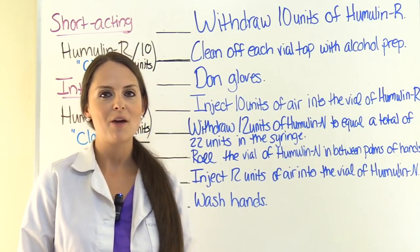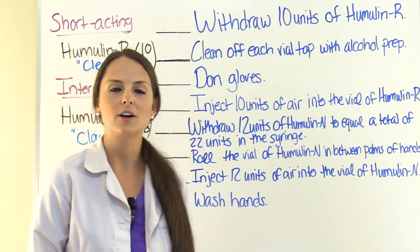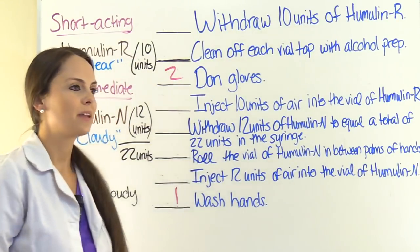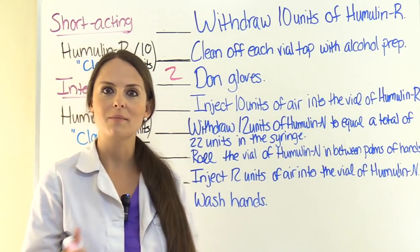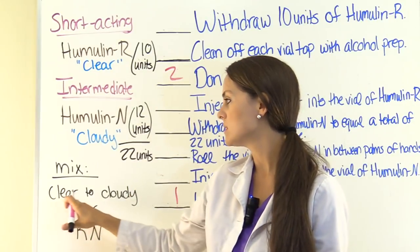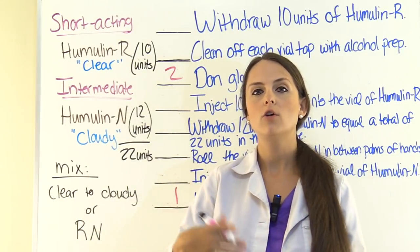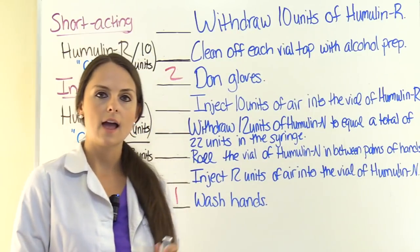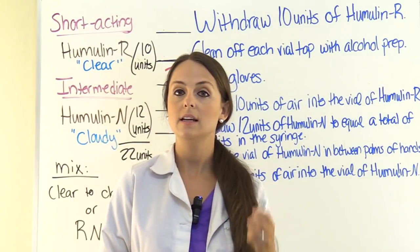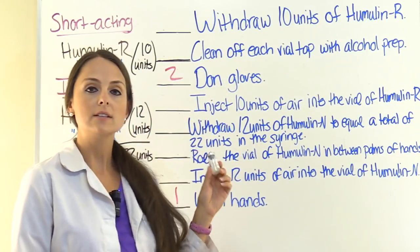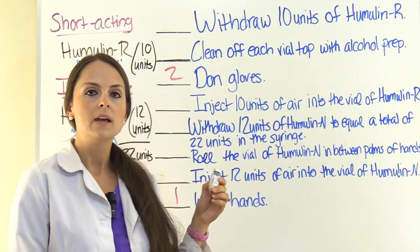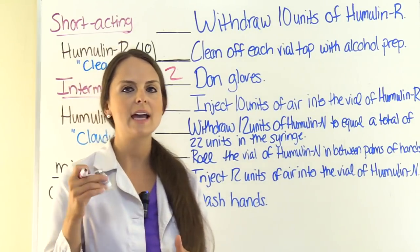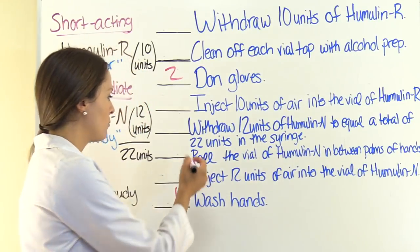Now let's put our options in order. What is the first thing you do before any procedure? You wash your hands — that's step one. Then you don gloves — step two. Now for the prep work: before withdrawing any solution, we need to mix our vial of Humulin N, the intermediate acting insulin. It's cloudy because the contents settle to the bottom as the vial sits. Gently roll it in between the palms of your hands — never shake it up and down, as that creates air bubbles. That is step three.